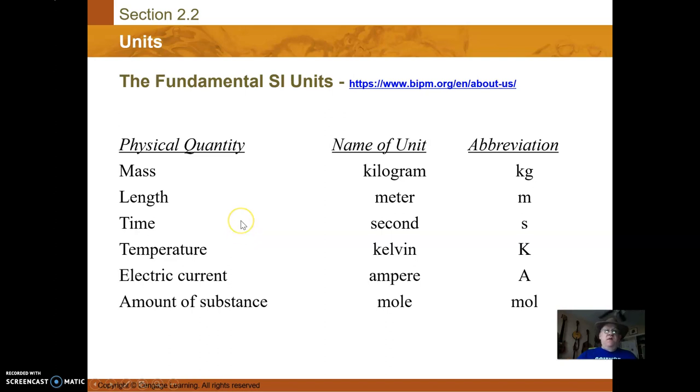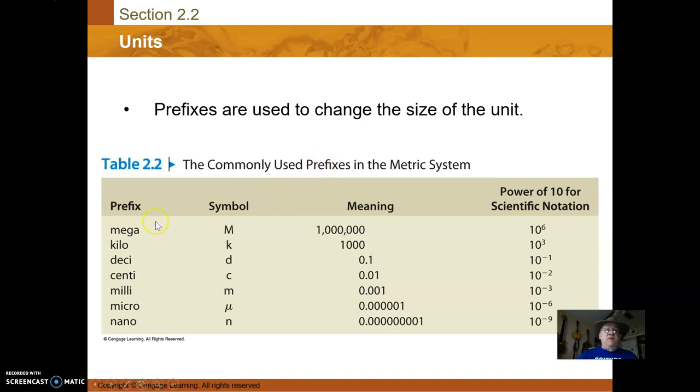The prefixes: mega is a million, 10 to the 6th. One megawatt is one million watts of power. Kilo, deci, denti. When you go from whole numbers to partial numbers to the right of the decimal point: deci, centi, milli, micro, nano. Nanograms is one gram times 10 to the negative 9.